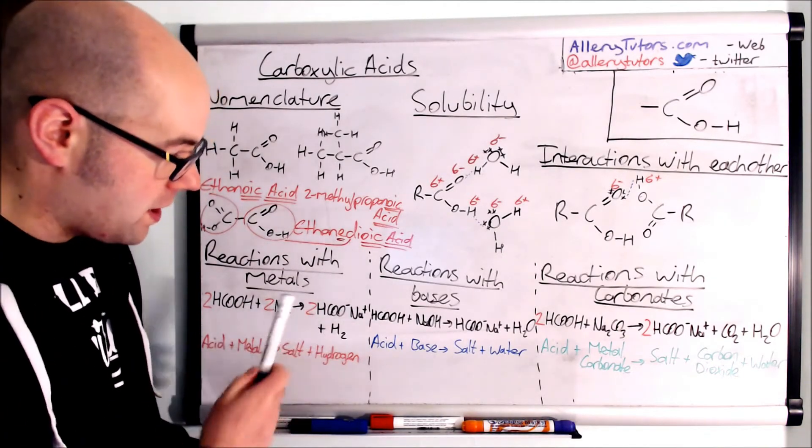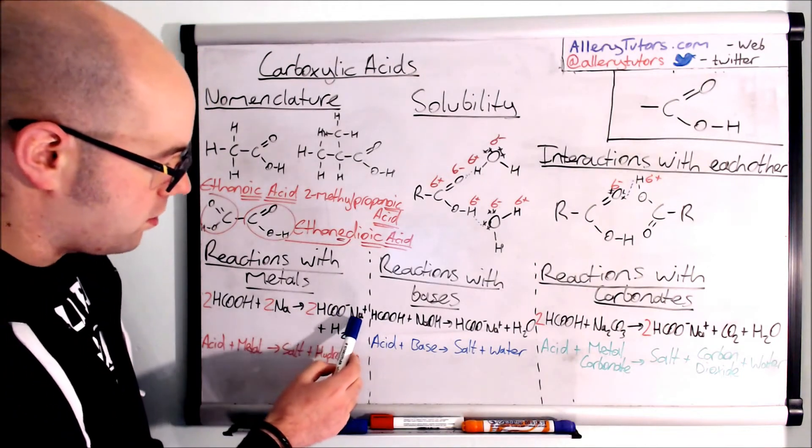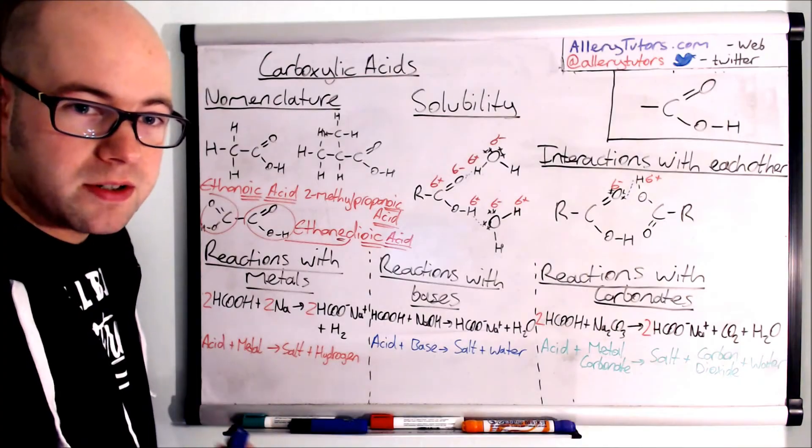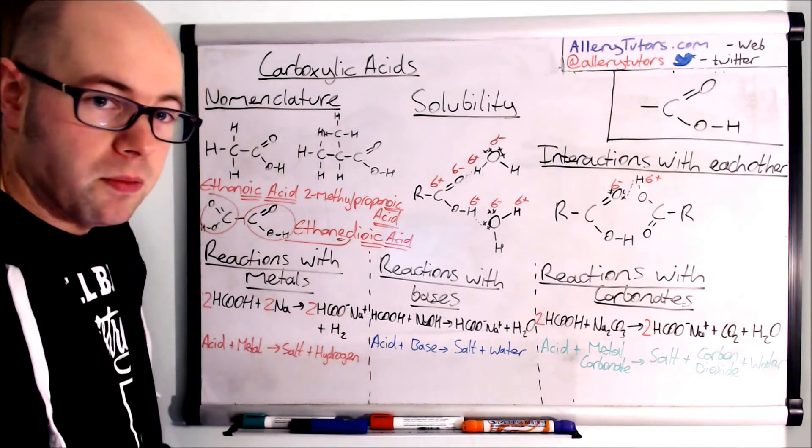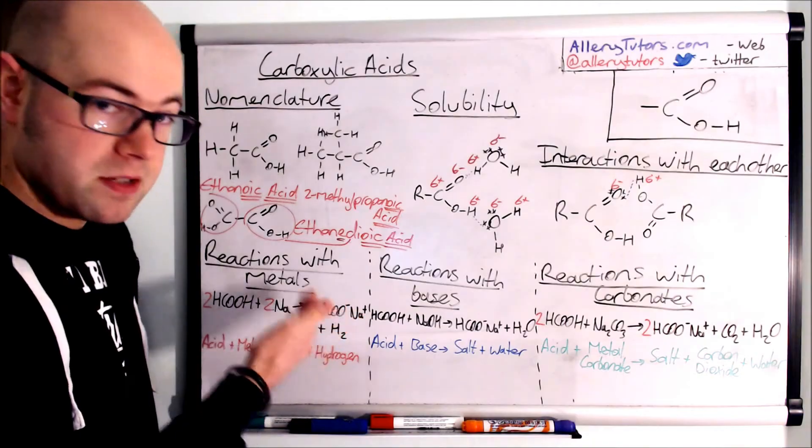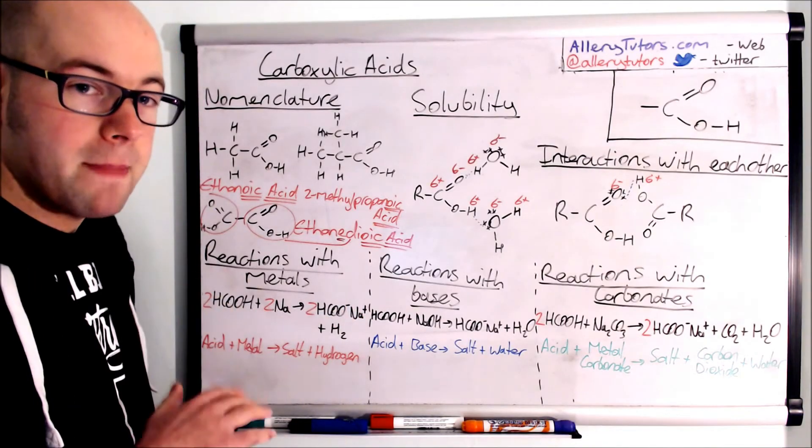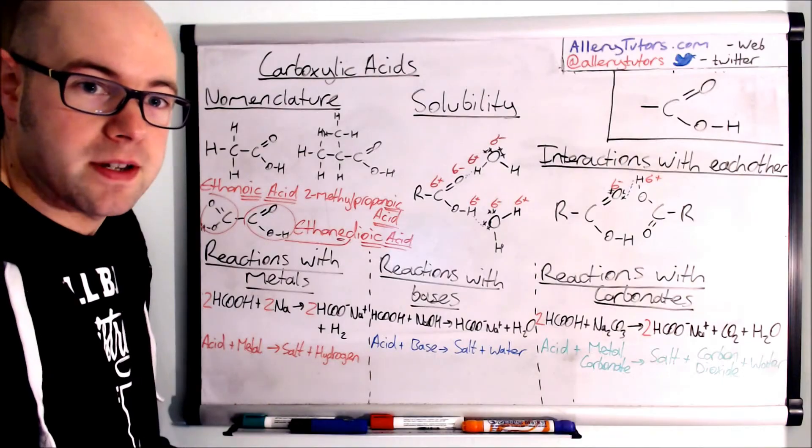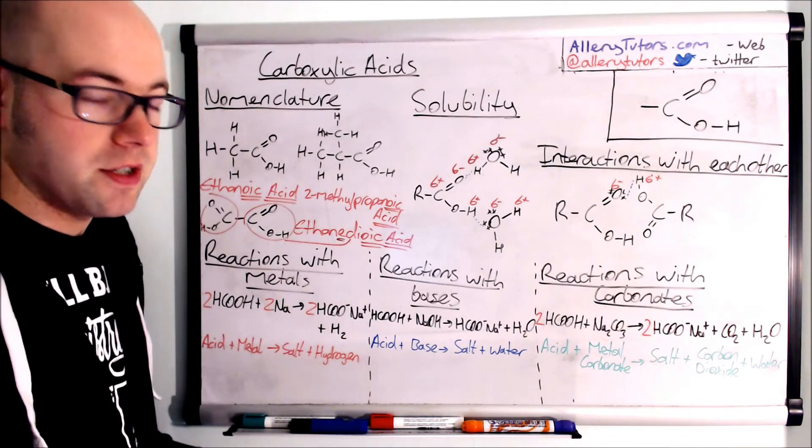In this case this one here is actually called sodium methanoate. That's the name of this salt here. So all you do is you say the metal that it's bonded to and then however many carbons you've got there. Because this is methanoic acid we call it sodium methanoate. If this was calcium we would say something like calcium methanoate. So it's really easy to name, make sure you know how to do it.